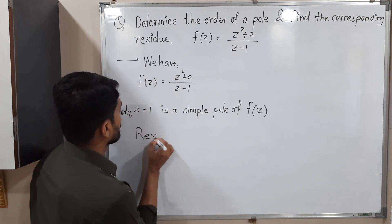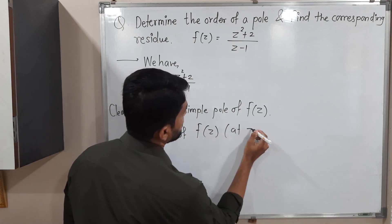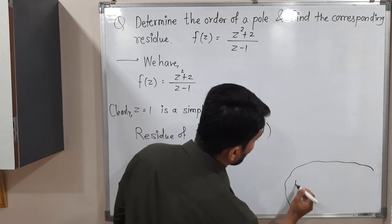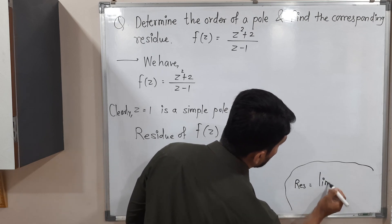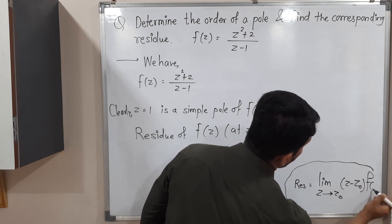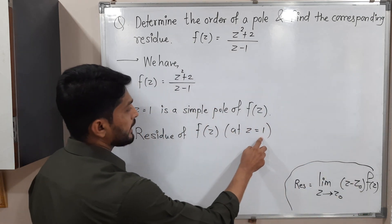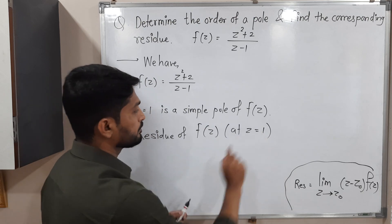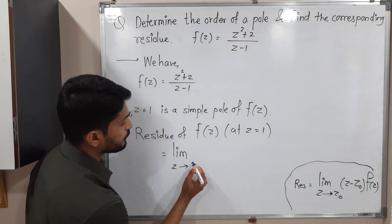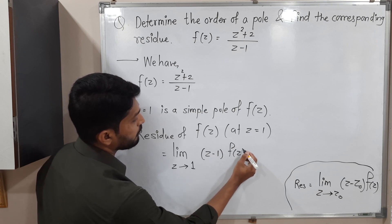So residue of f(z) at z = 1. Let me mention the formula. When you have a simple pole, the formula to calculate residue is lim(z→z₀) (z - z₀)f(z). This is the formula we have. This time value of z₀ is 1, since I am going to calculate residue at this point. Let us apply the formula lim(z→1) (z - 1)f(z).